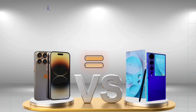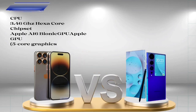iPhone 15 Ultra processor: CPU 3.46 GHz Hexa-core. Chipset: Apple A16 Bionic. GPU: 5-core Apple GPU.